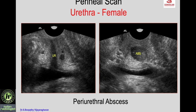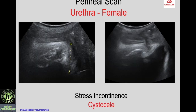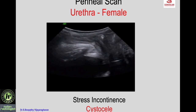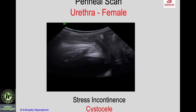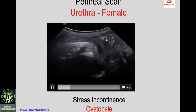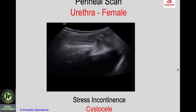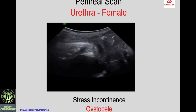A 3D scan can show how far the periurethral abscess encircles the urethra. In a female with stress incontinence, perineal scan at rest and with Valsalva shows the bladder herniating and prolapsing into the vagina — that is a cystocele — with a rotatory descent of the urethra. Assessment of pelvic floor is a separate lecture.